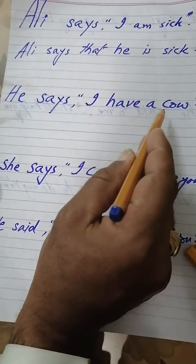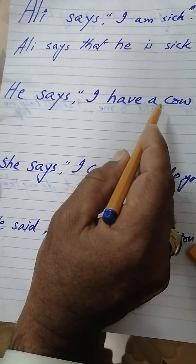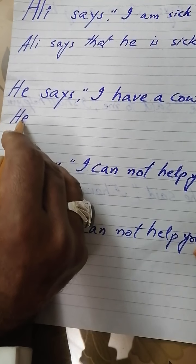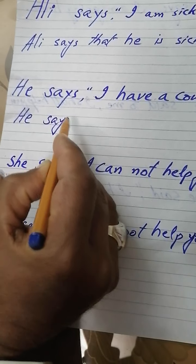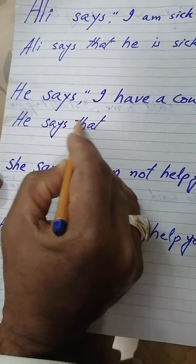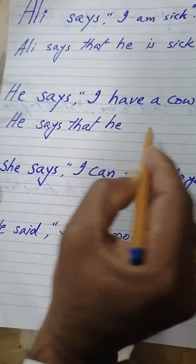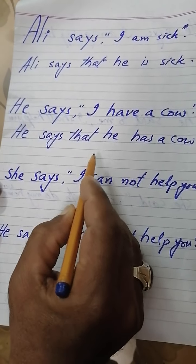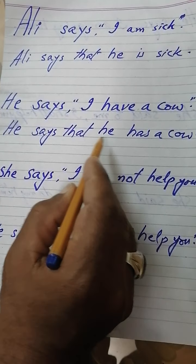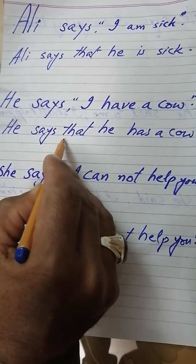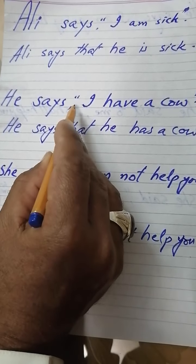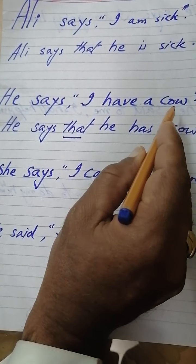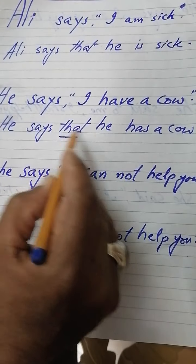Let's come to the next sentence: 'He says I have a cow.' Let me change it into indirect narration. He says that he has a cow. You saw that in indirect narration there is 'that' in place of commas. Direct: 'He says I have a cow.' Indirect: 'He says that he has a cow.'